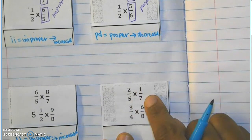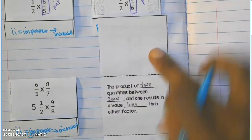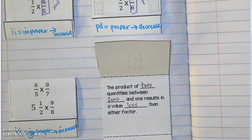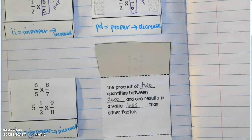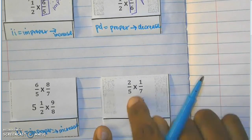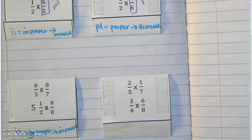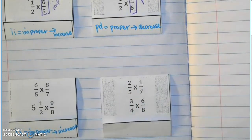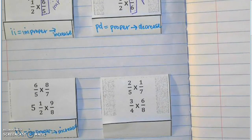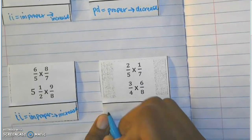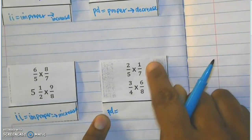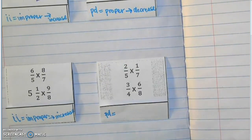When I have a proper fraction times a proper fraction: the product of two quantities between zero and one — which is a proper fraction — results in a value less than either factor. A fraction is a part of a whole, so it's less than a whole piece. When I multiply two tiny things together, my answer gets even smaller. I tell my students: when you take a piece of a piece, you get a crumb. What is one-seventh of two-fifths? Two-fifths is already a piece, and one-seventh of that piece is a crumb. This is also a PD — proper decrease. The product is going to be less than one-seventh and less than two-fifths; it's smaller than both initial factors.